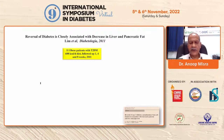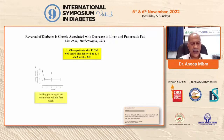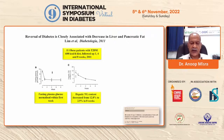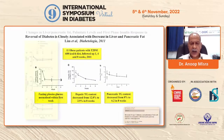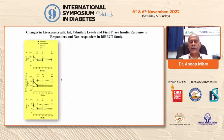Eleven obese patients with type 2 diabetes were given a markedly hypocaloric diet and followed up for one, four, and eight weeks. Fasting plasma glucose normalized within the first week. Hepatic triglyceride content decreased from 12.8 to 2.9 percent — a 10 percent drop in eight weeks. Pancreatic triglyceride content decreased from 8.2 percent, and even this modest decrease was considered responsible for diabetes reversal.